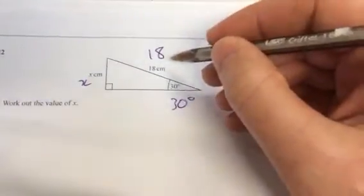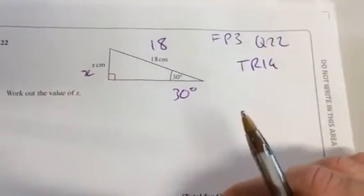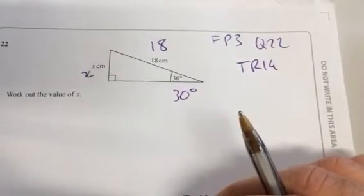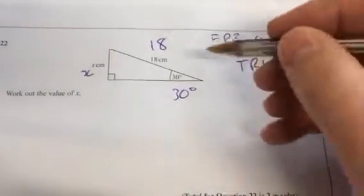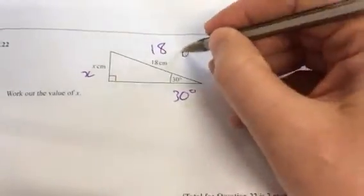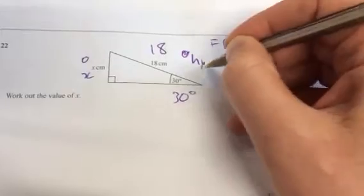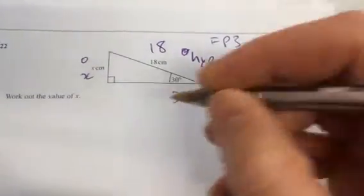We're going to work out the value of x, which is the side with the triangle 18 and angle 30. What do we do? Our opposite and hypotenuse are the two that we have got. So we've labeled the sides. You can see hypotenuse and the opposite over 30 degrees.